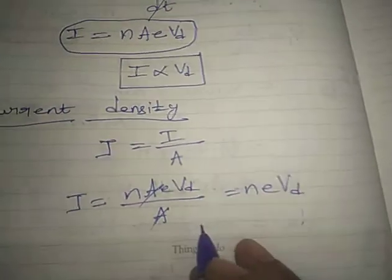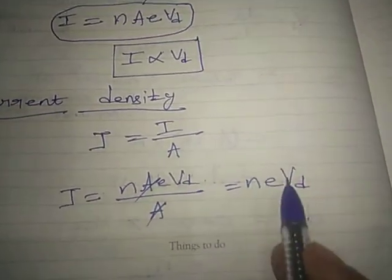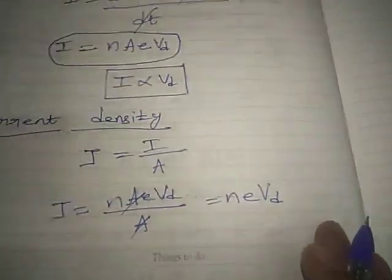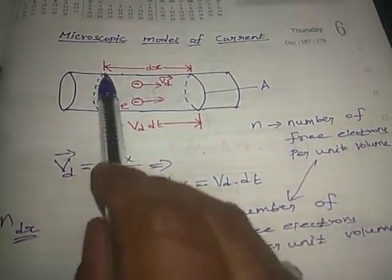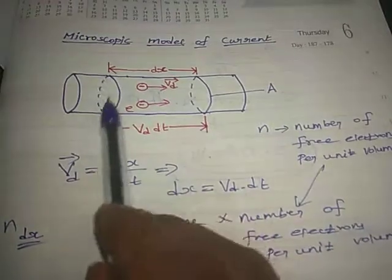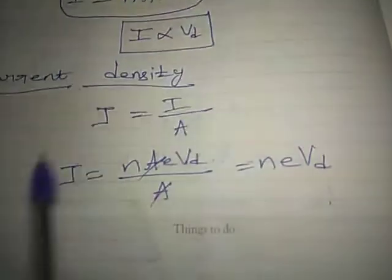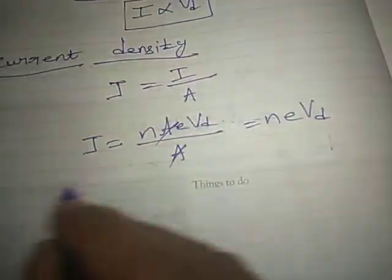The expression J = neVd is valid only when the direction of current is perpendicular to the area. For example, if electrons move upward, the current direction is perpendicular to the area of cross section. Only in this condition is J = neVd applicable.